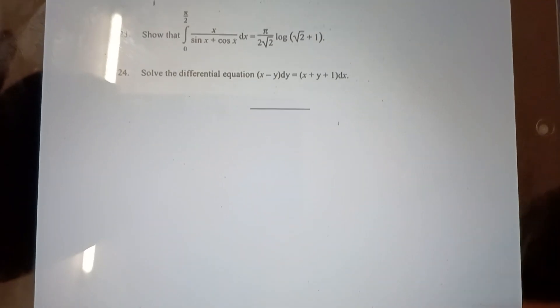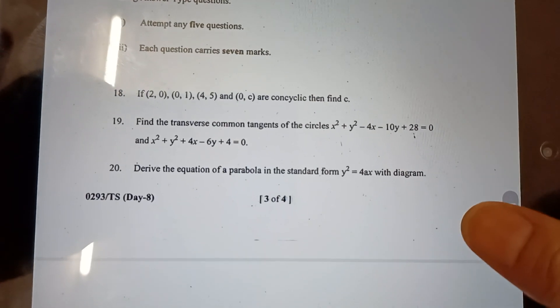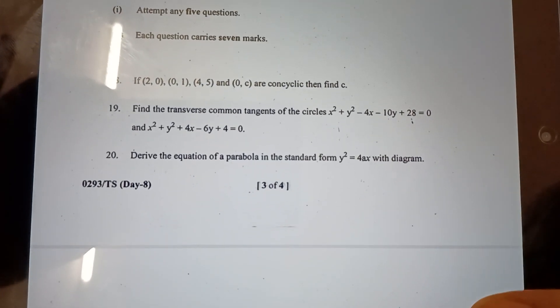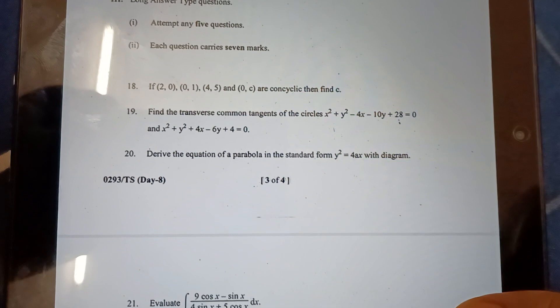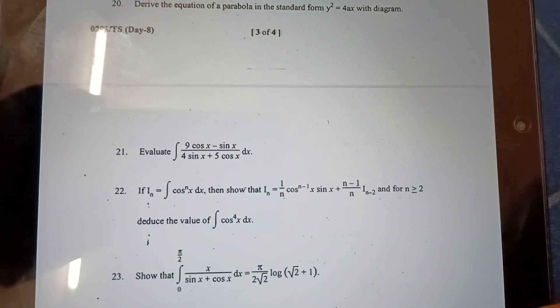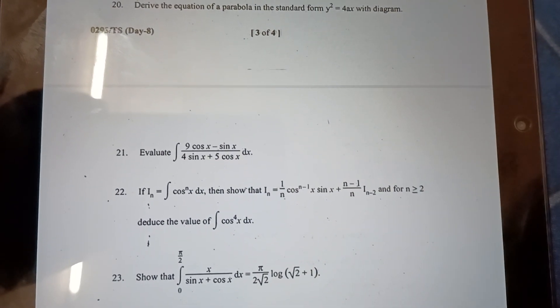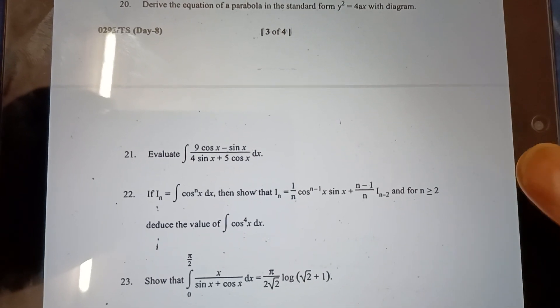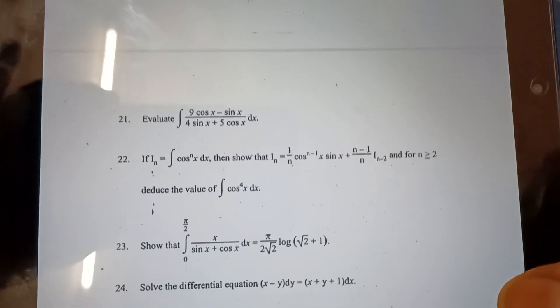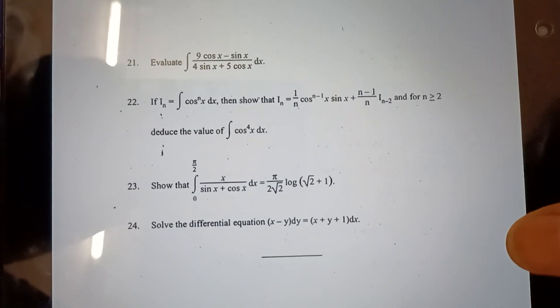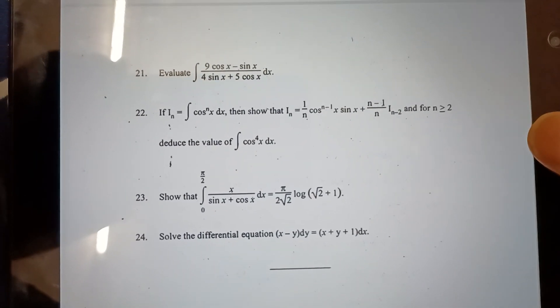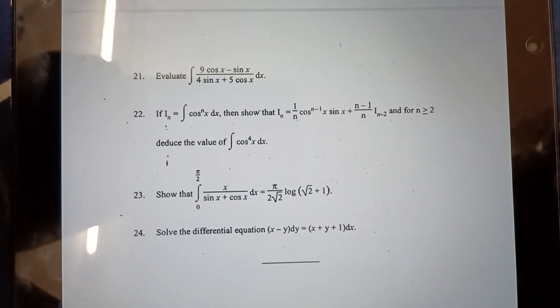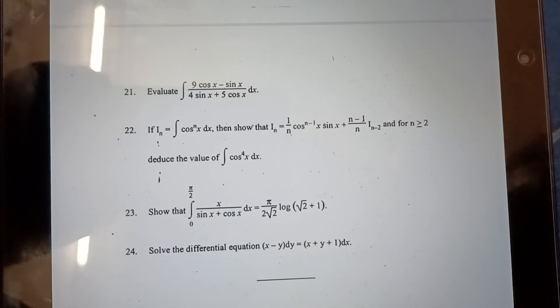In Section C: first one is concyclic, second one is about common tangents. Next, differential of the parabola. Next, integration of (9cos(x) - sin(x))/(4sin(x) + 5cos(x)). Next, reduction formulas—total six are there, so you should prepare all six. And then questions 23 and 24: 23 is definite integration, 24 is differential equations.